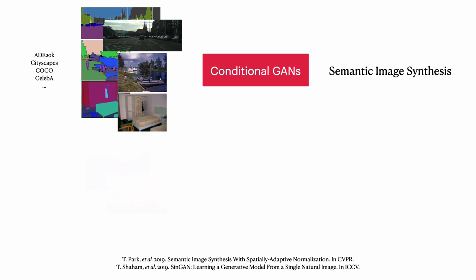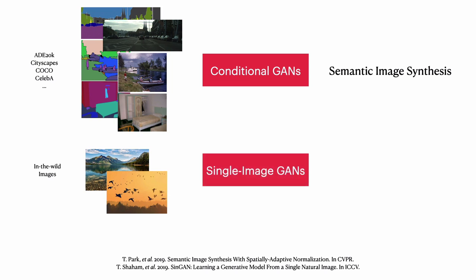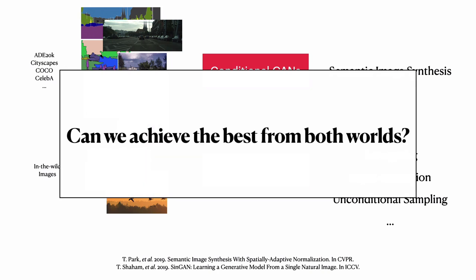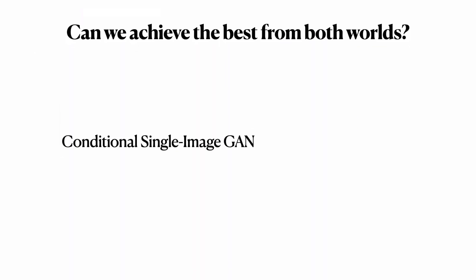Along another line, recent efforts on single image GANs show the possibility to learn a generative model from the internal patch distribution of a single image. Progress has been made in tasks such as retargeting, super-resolution, and unconditioned image generation. While these single image GANs are dataset-independent and generate promising results, the semantic meaning of patches inside a single image remains less explored. To accomplish the proposed task in a generative way, we combine the advantages from both worlds. With a conditional single image GAN, we train a generative model that generates semantically controllable images through segmentation labels in the own context of a source image instead of external datasets. We show that a natural image is semantically self-contained and it is feasible to find the patch-level semantic correspondence between a single image and its segmentation map.